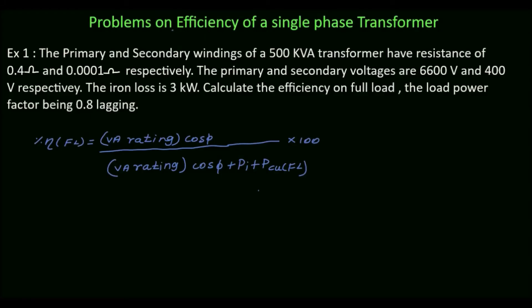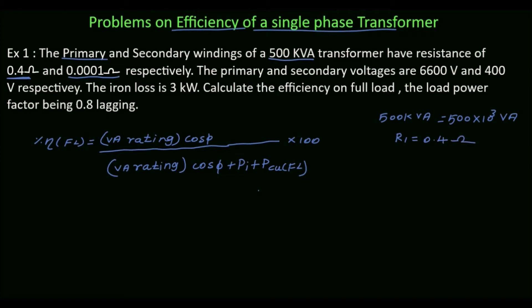In this video we will see how to calculate the efficiency of a single phase transformer. The problem is: the primary and secondary windings of a 500 kVA transformer have resistance of 0.4 ohm and 0.0001 ohm respectively. So the rating is 500 kVA, equal to 500 × 10³ VA. The primary winding resistance R1 is 0.4 ohm and the secondary winding resistance R2 is 0.0001 ohm.